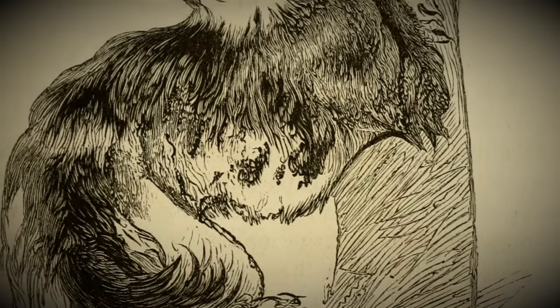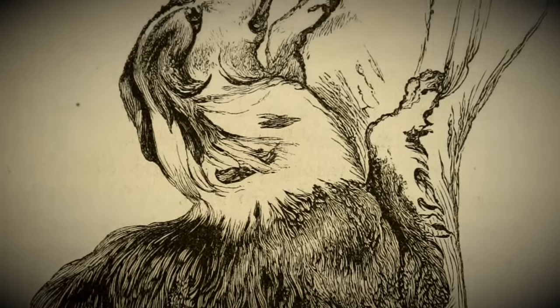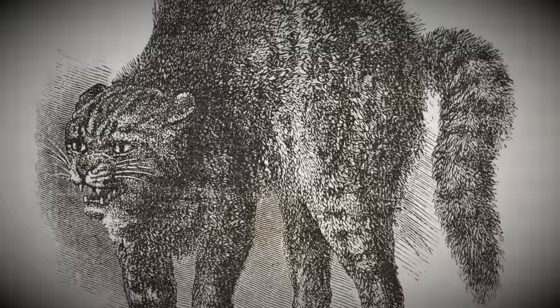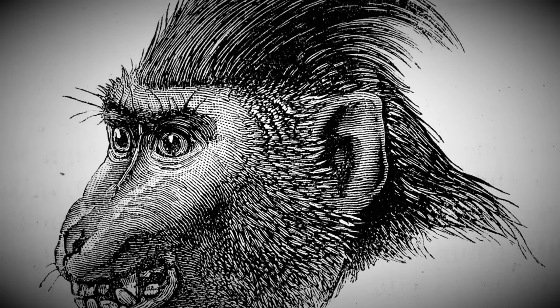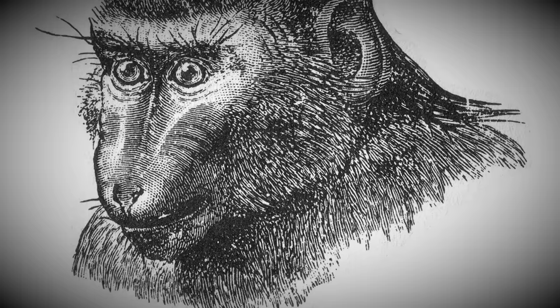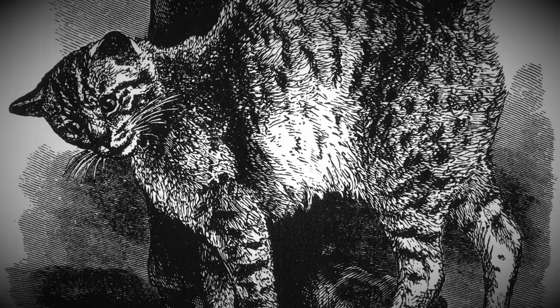For the animal kingdom, Darwin shows various expressive movements of dogs, cats, horses, ruminants and monkeys. He visualizes various facial expressions in the book showing joy, affection, pain, anger, astonishment and terror.